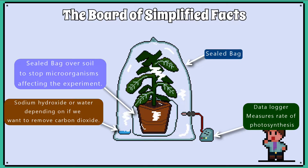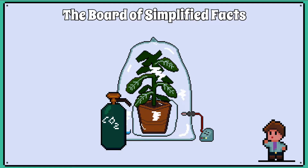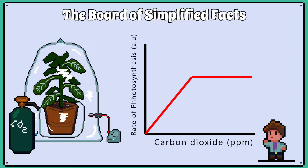We also have the option of placing sodium hydroxide solution with the plant if we wish to remove carbon dioxide from the atmosphere, but otherwise we place water of equal volume in there. This is to try to control the variable that is the volume of atmosphere available to the plant for each observation. Finally, for this example we can also control the levels of carbon dioxide by using this gas canister.